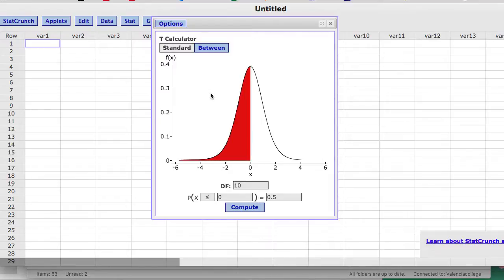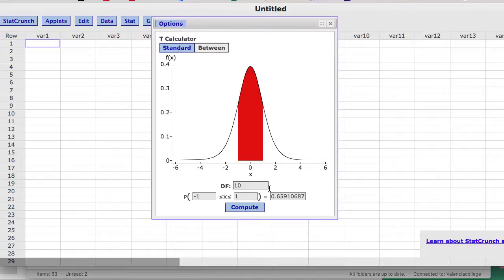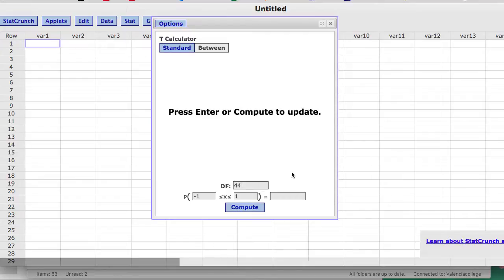So for example, suppose I'm doing a confidence interval, and I'm doing a 95% confidence interval. So a confidence interval is always the between feature. And what I'm going to do in this case is let's suppose my degrees of freedom was 44, like we talked about in that prior example looking at the table. So I have a sample size of 45, have 44 degrees of freedom.